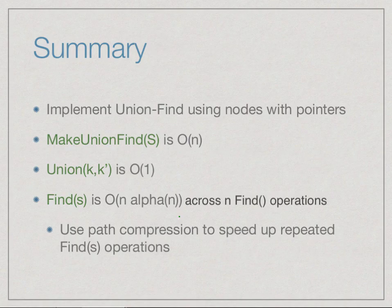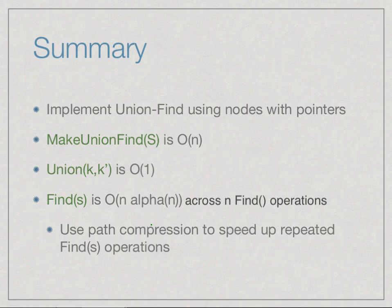To summarize: implementing union-find using nodes with pointers, make-union-find runs in O(n) time, union is O(1), and find with path compression runs in amortized O(α(n)) per operation — essentially O(n) total for n operations — which is a considerable saving over the array-based implementation. Thank you.